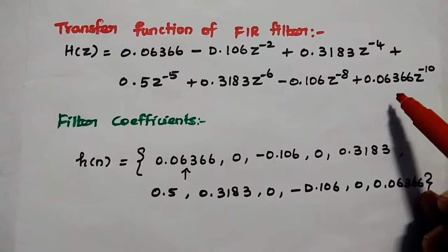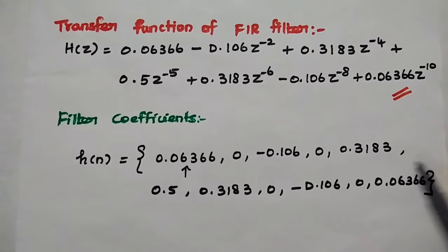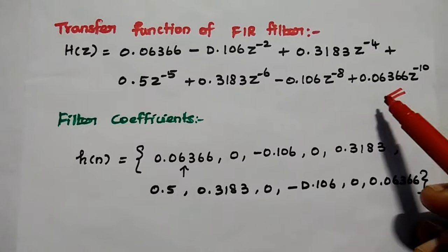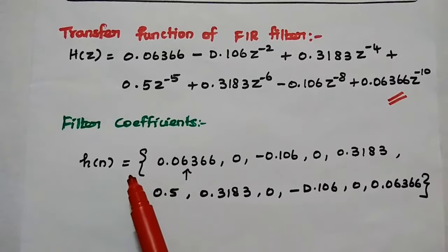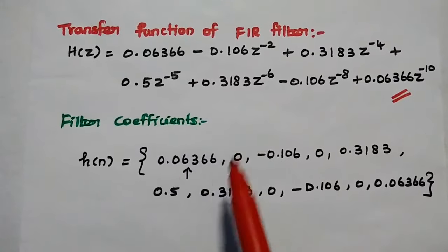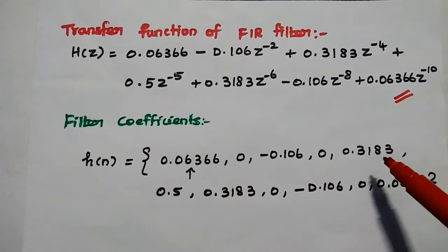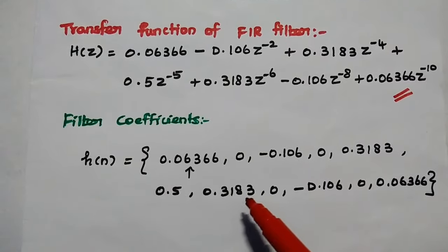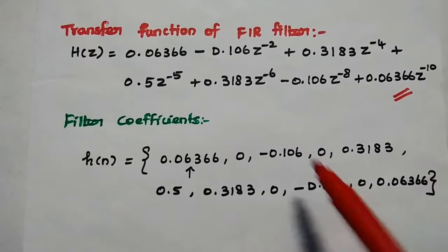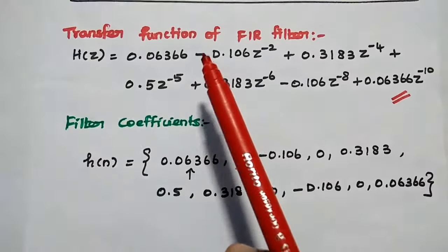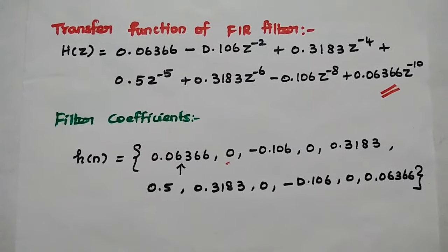We have obtained the transfer function of the low-pass digital FIR filter using the Fourier series method. From this transfer function, the filter coefficients h(n) are: 0.06366, 0, -0.106, 0.3183, 0.5, 0.3183, 0, -0.106, 0.06366. The z^(-1) term is absent, so its coefficient is 0. This is the final answer.